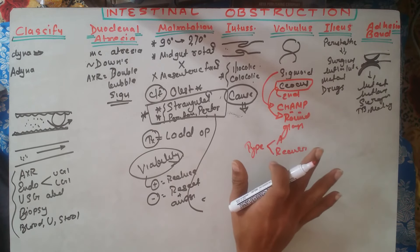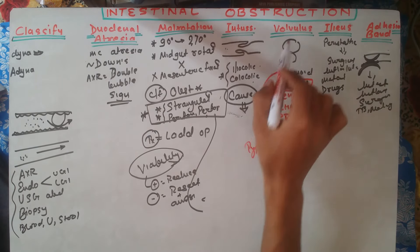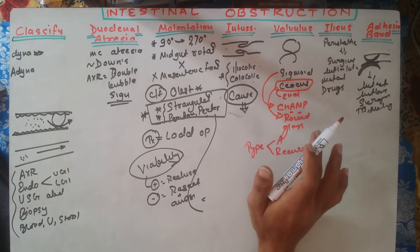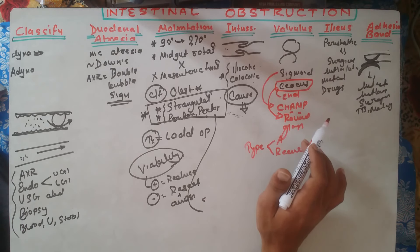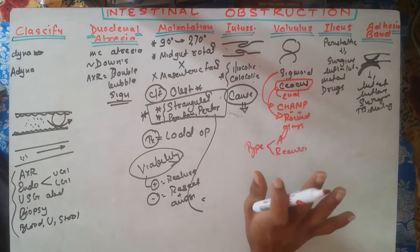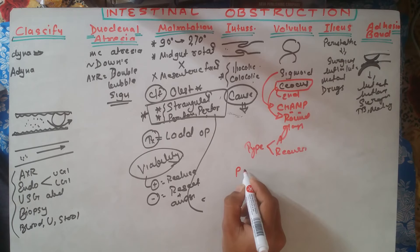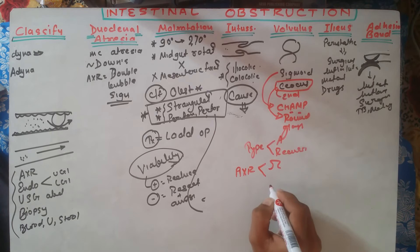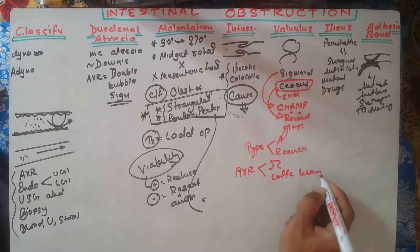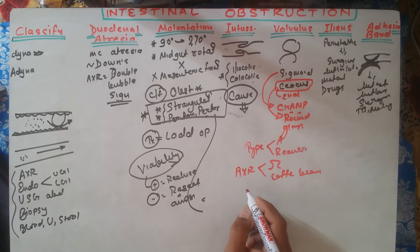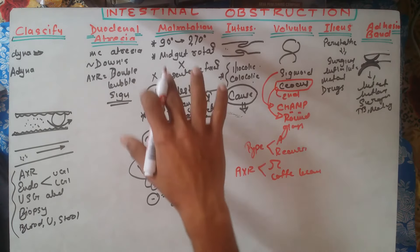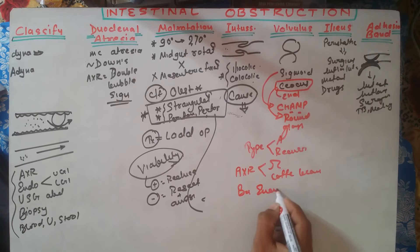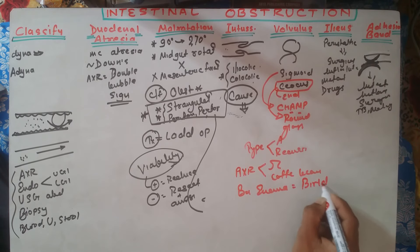Since volvulus is a large bowel obstruction, clinical features include constipation, abdominal distension, and vomiting late in presentation, along with dehydration. Complication can include peritonitis. On abdominal X-ray, two important signs are the omega sign and coffee bean sign. On contrast barium enema, there will be a bird's beak appearance.